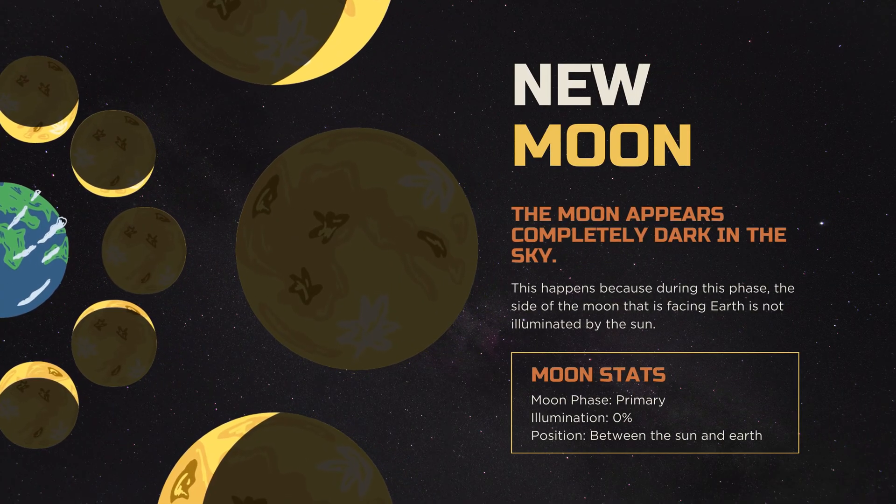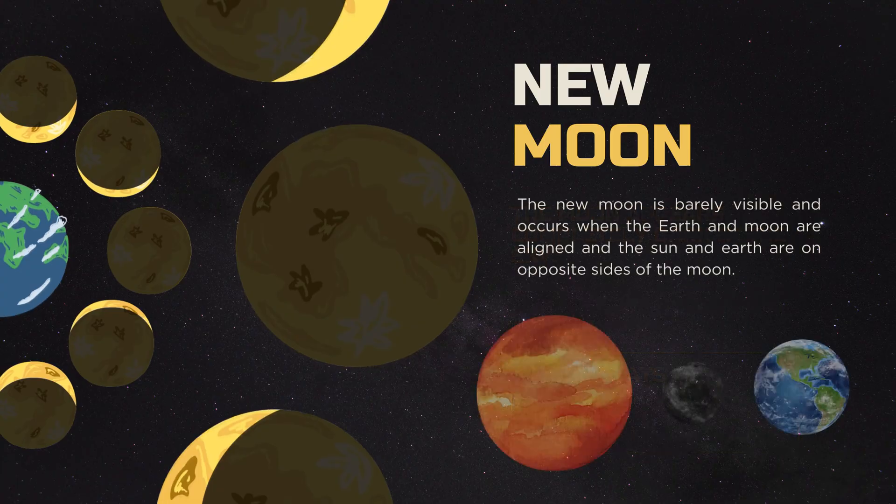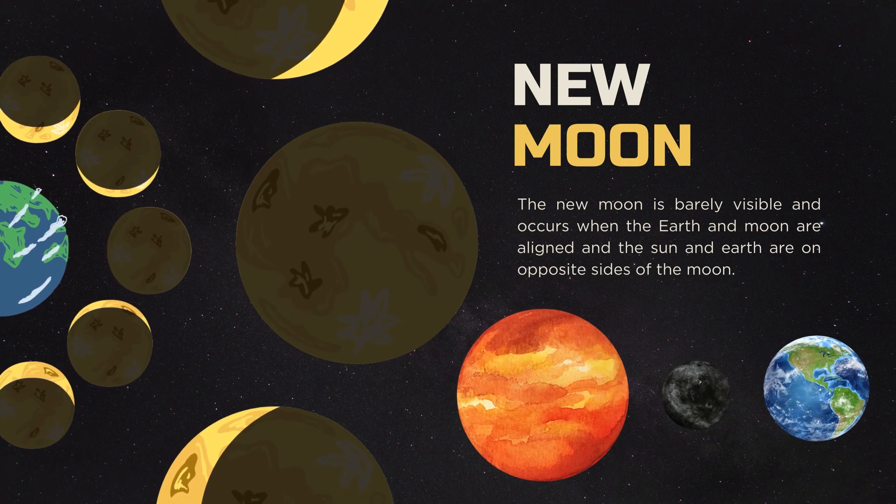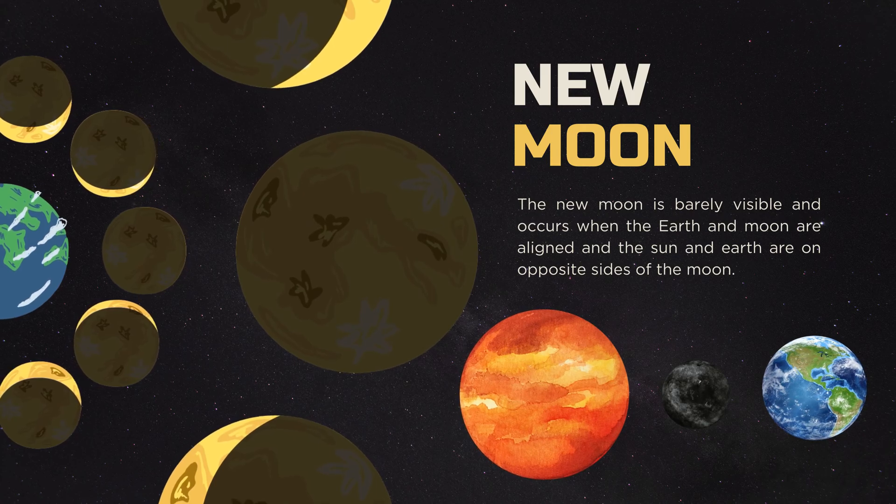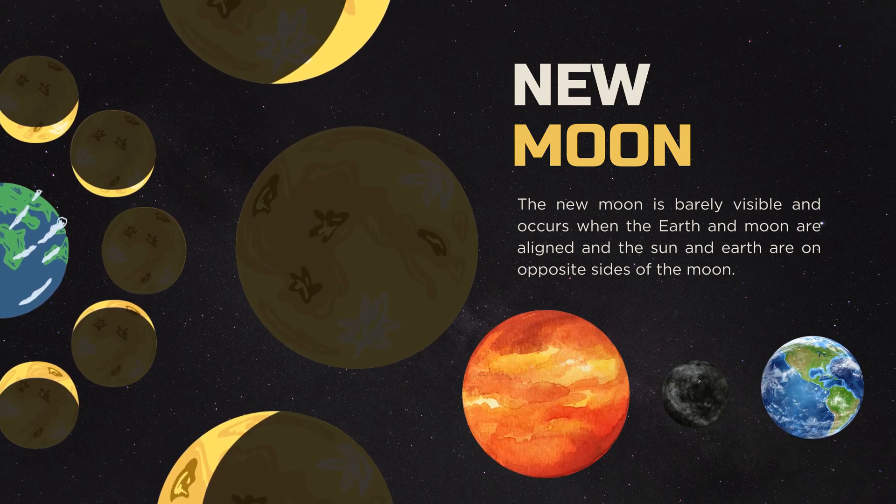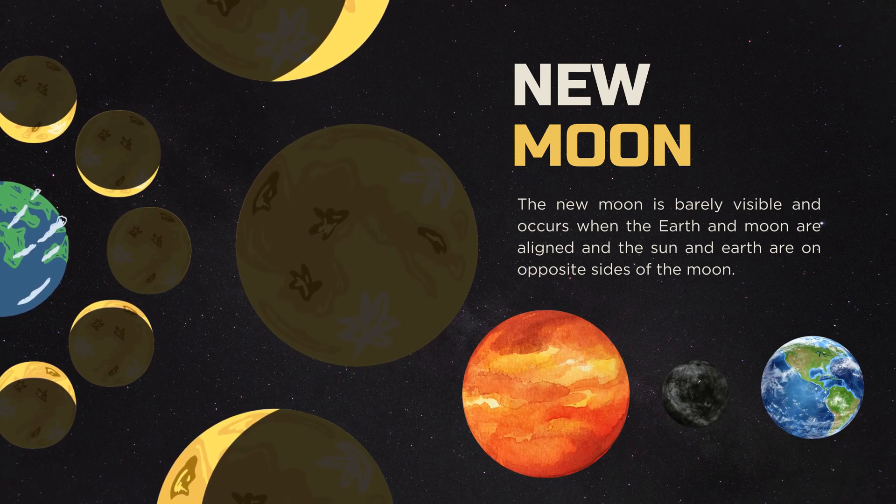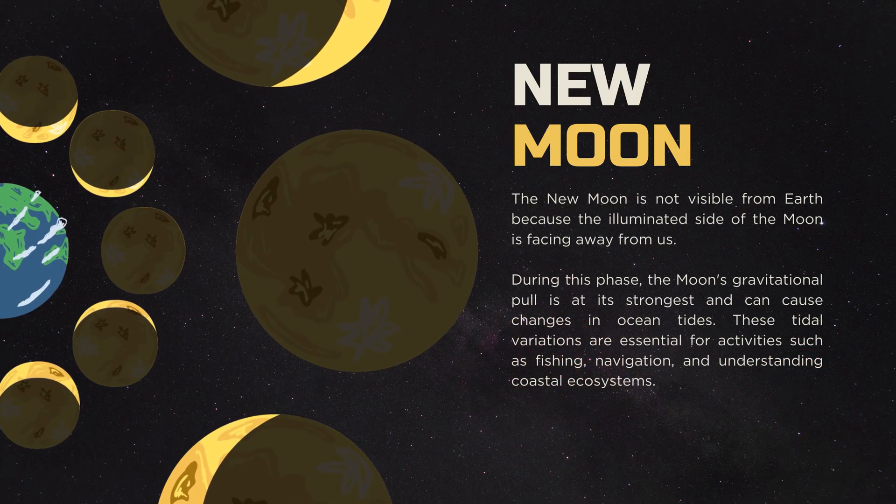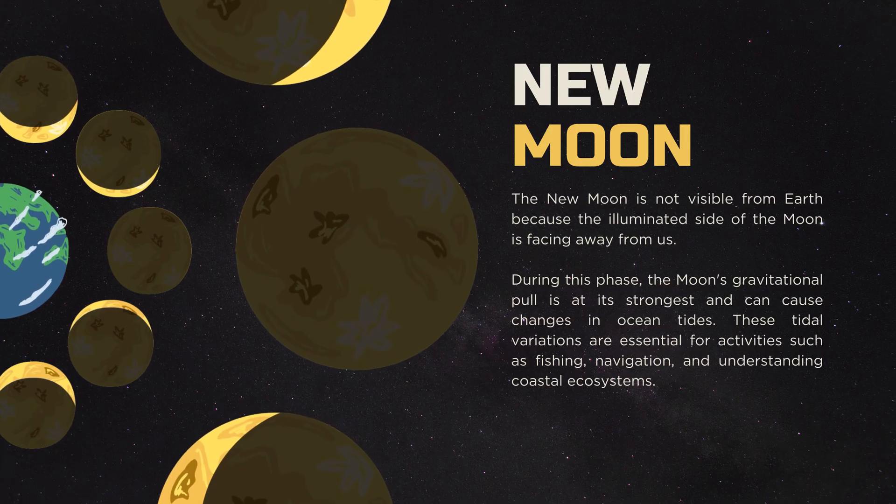This is the first phase of the Moon's cycle. The Moon is located between the Earth and the Sun, and the side of the Moon facing Earth is in shadow. It appears as a dark circle in the sky and is not visible from Earth. The New Moon is not visible because the illuminated side of the Moon is facing away from us.